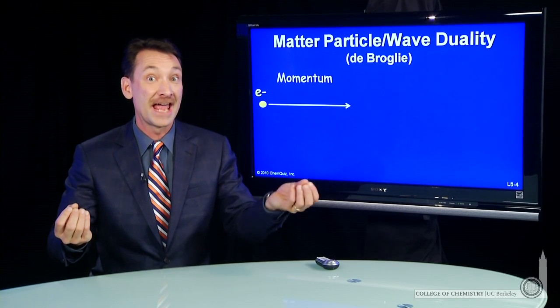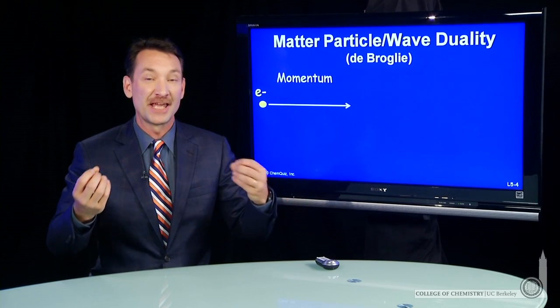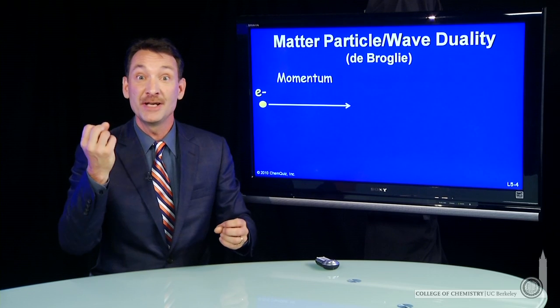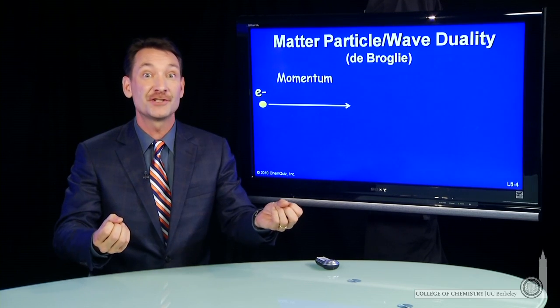Light behaved like a wave and a particle. And we came up with a beautiful relationship between the particle nature, its momentum, and the wave nature, the wavelength.